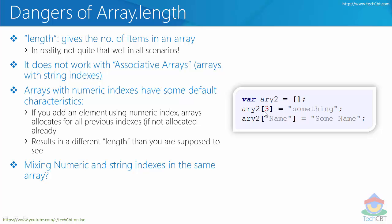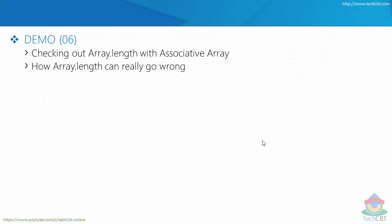There is one more scenario: whenever you mix numeric indexes together with string-based indexes, you are going to get a different count as part of the length. This is a scenario you have to keep in mind — it is not a good idea to have various kinds of indexes in the same array, meaning numeric-based and string-based indexes should not be mixed in the same array.